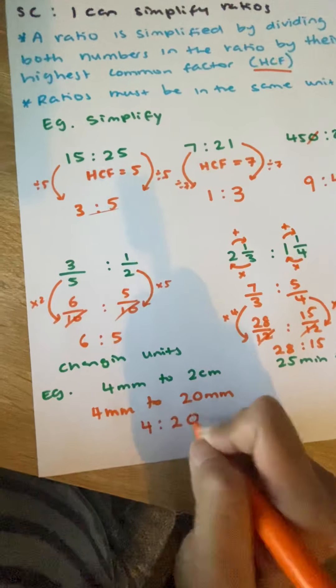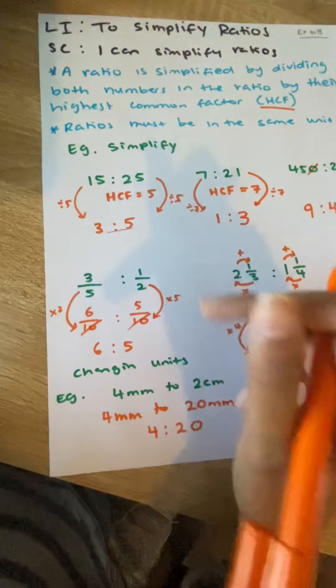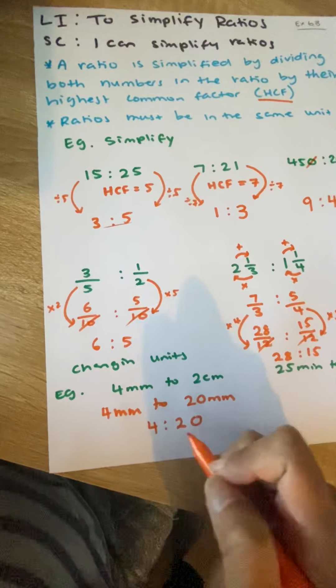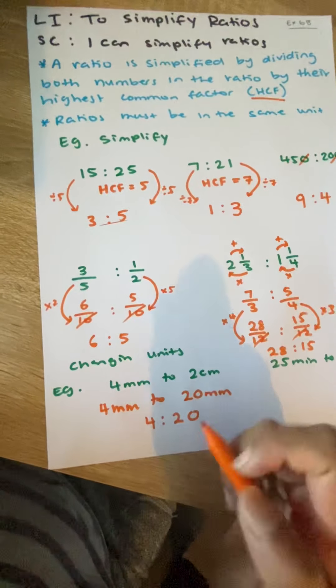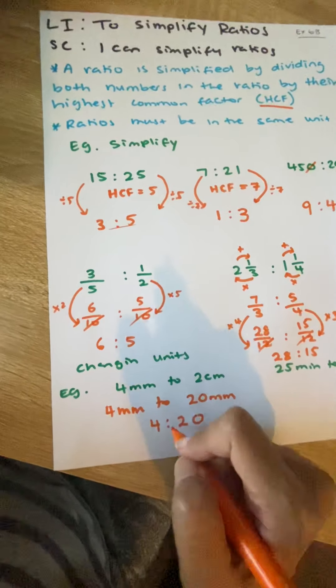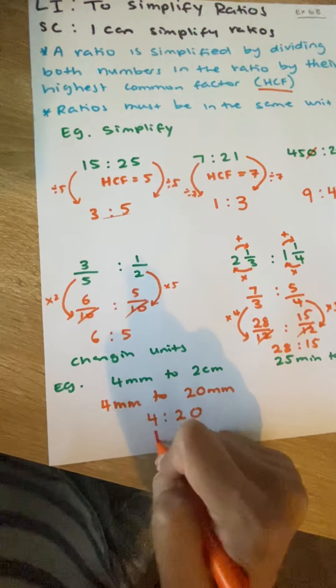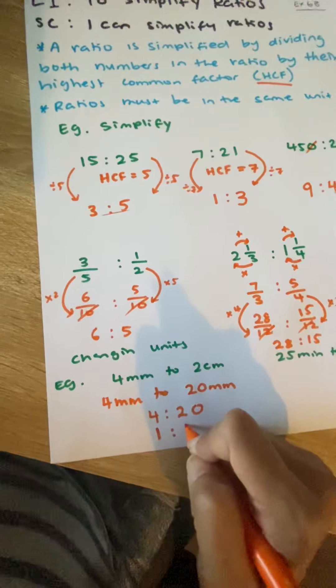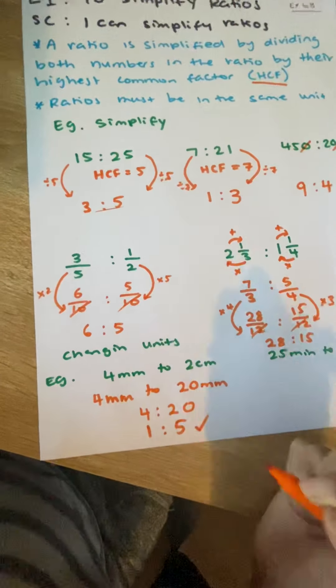4 to 20. But remember, from here, we know how to simplify. So, we can say what number goes into 4 and 20. That is the number 4. 4 goes into 4 one time. And 4 goes into 20 five times. So, that is my answer.